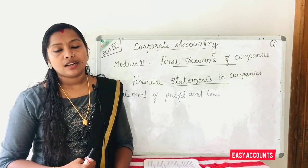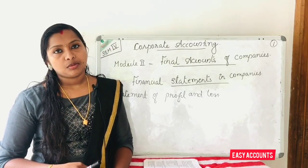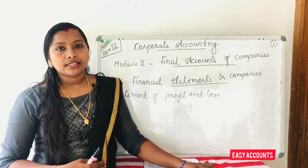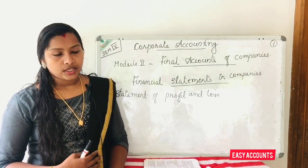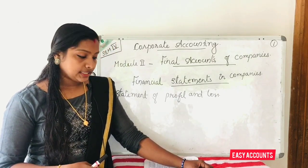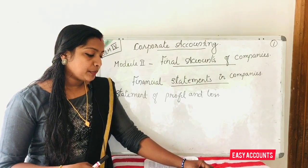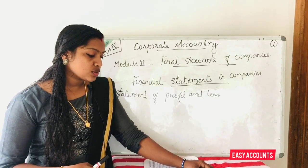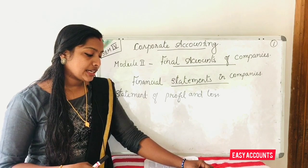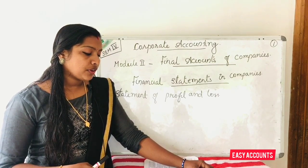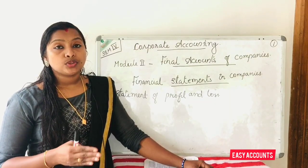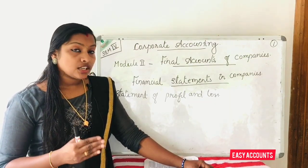We will study where the balance sheet is and where the profit and loss statement is. As per Section 128 of the Companies Act of 2013, every company shall prepare and keep at its registered office books of accounts and other relevant books, papers, and financial statements for every financial year, which will give a true and fair view of the state of affairs of the company.